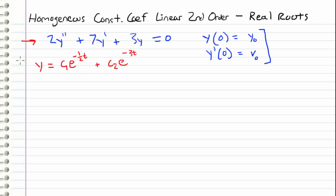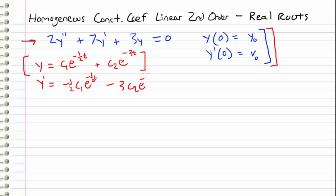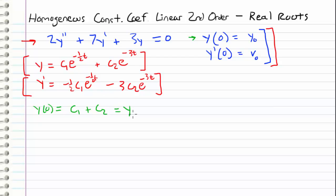Now we apply the initial conditions. First, differentiate y to get y prime equals negative 1/2 times c1·e^(−t/2) minus 3·c2·e^(−3t). Applying y(0) = y0 gives c1 + c2 = y0, since the exponentials evaluate to 1. Applying y'(0) = v0 gives negative 1/2·c1 minus 3·c2 equals v0. We now have two equations and two unknowns, c1 and c2.